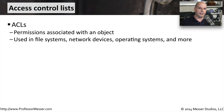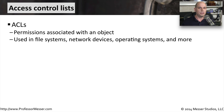An access control list is a set of permissions that are assigned to an object. You'll hear these referred to as ACLs. They're used on many different kinds of technologies — firewalls, switches, routers, and operating systems. All of these use ACLs to allow or restrict access to certain parts of the network or to certain parts of an operating system.